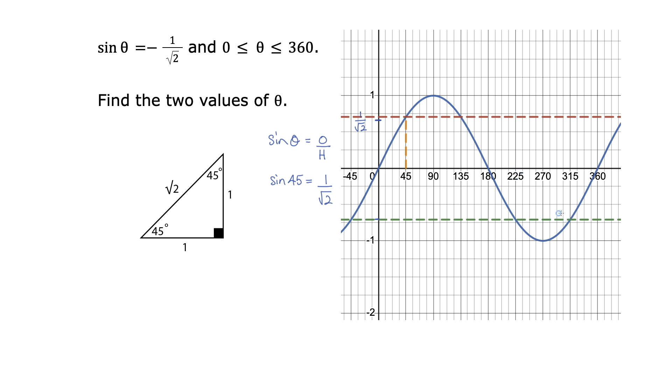That is 225 degrees and that is 315 degrees. So theta is equal to 225 degrees and 315 degrees.